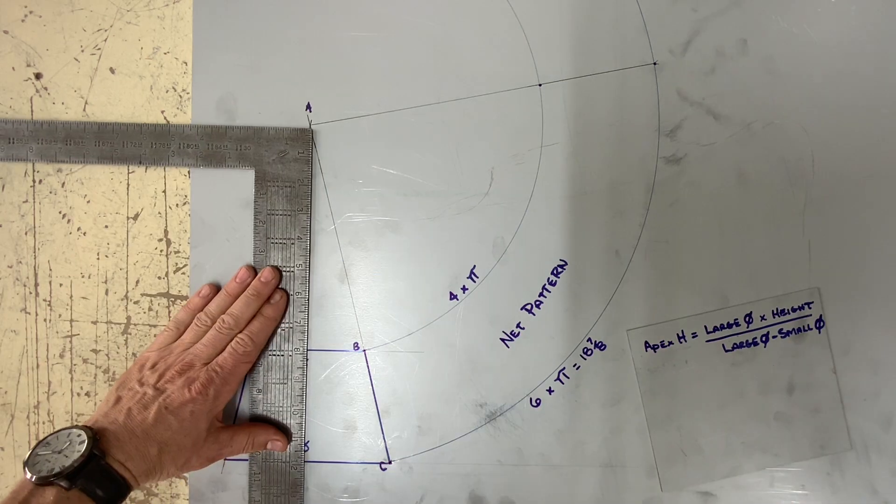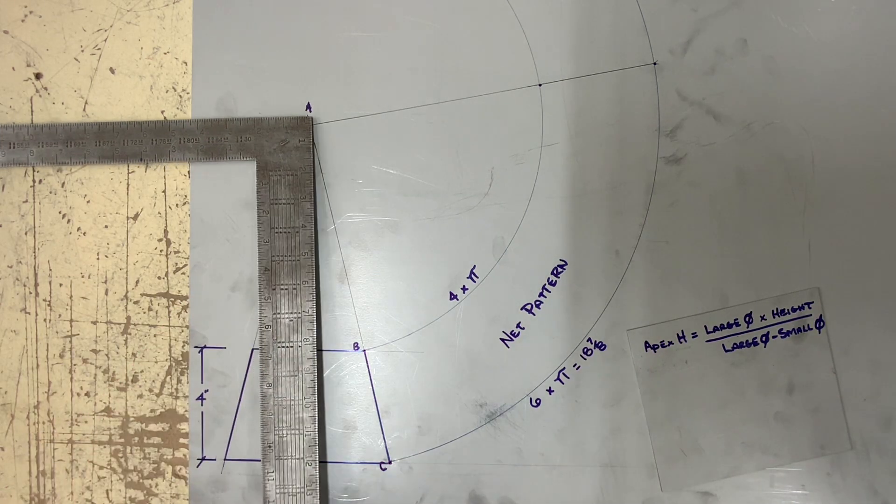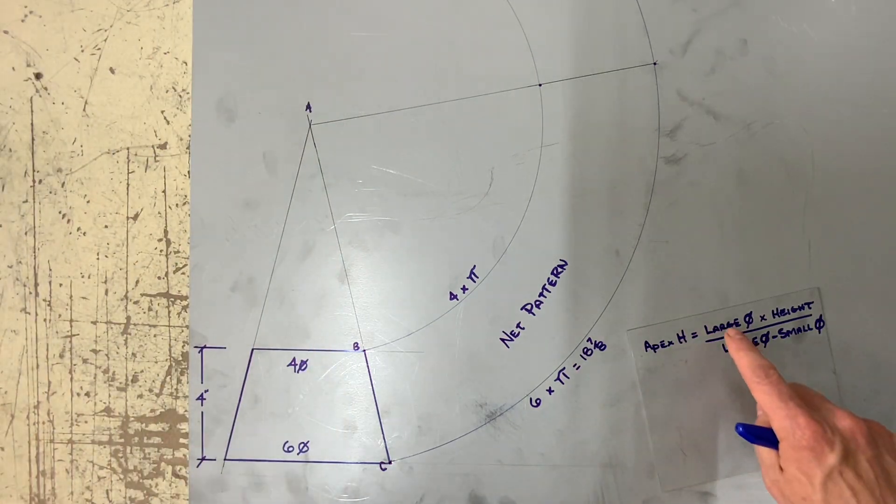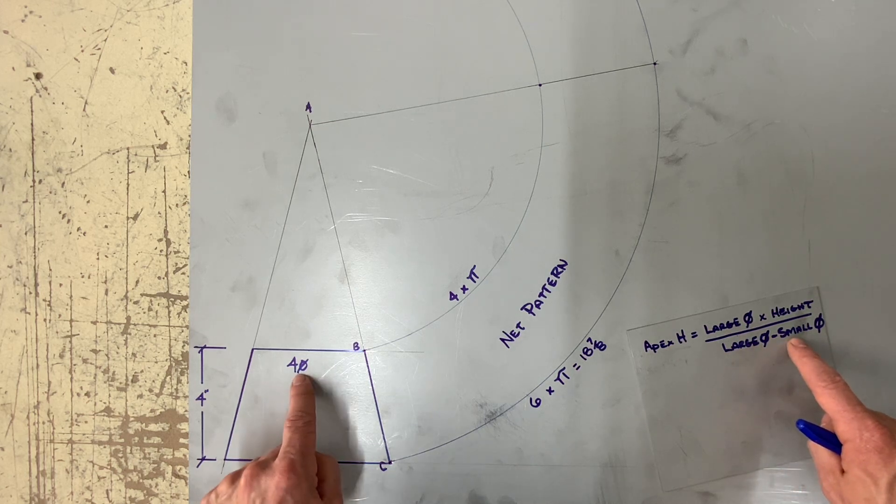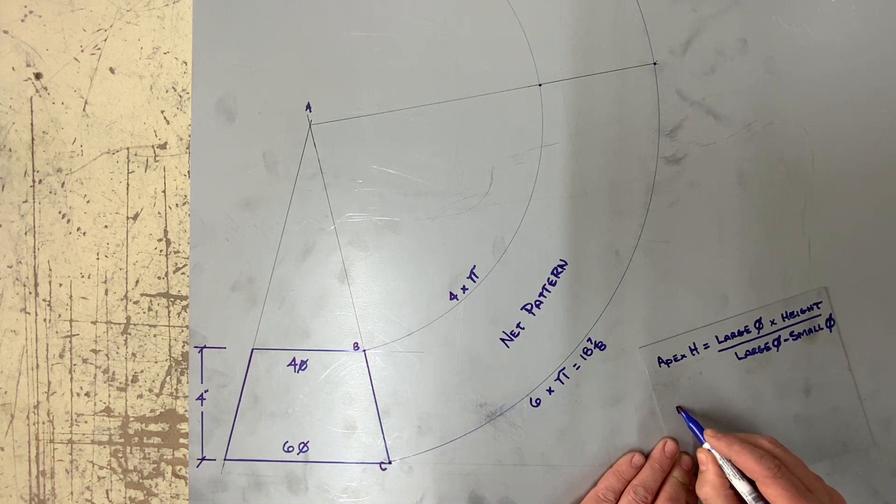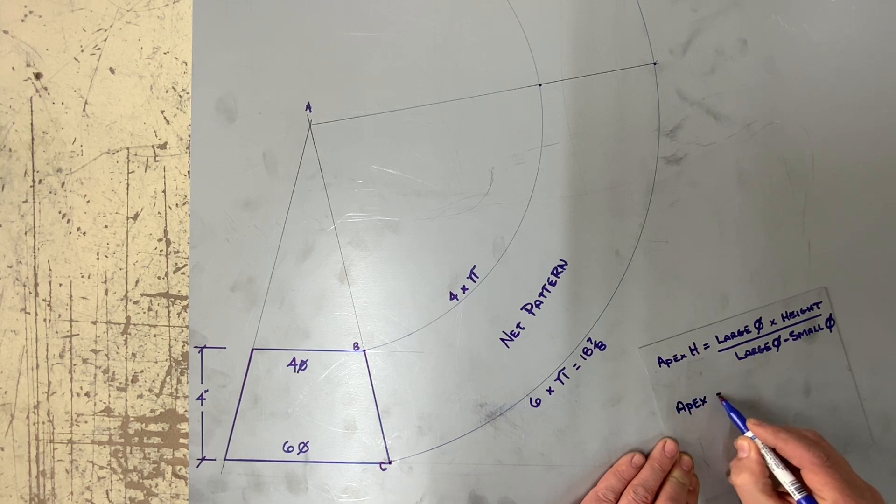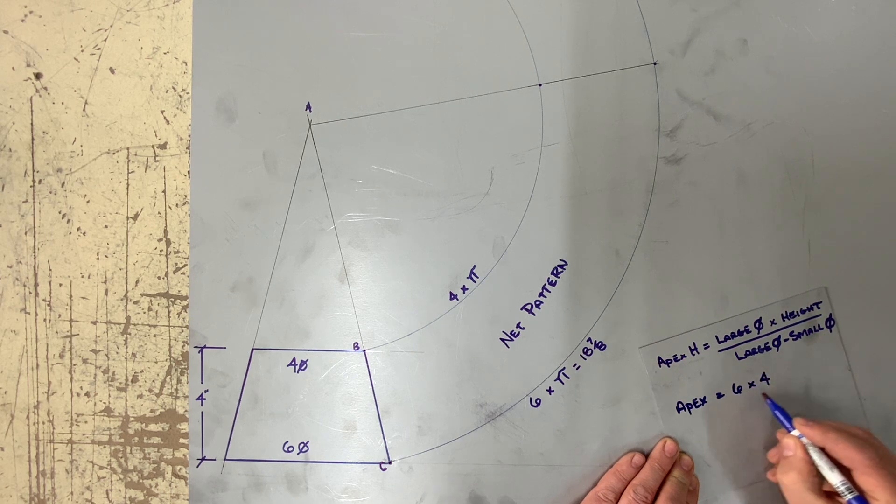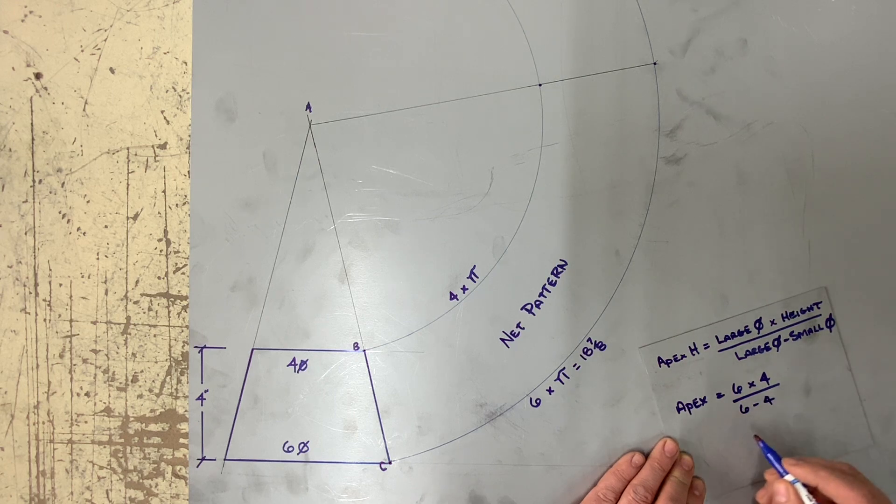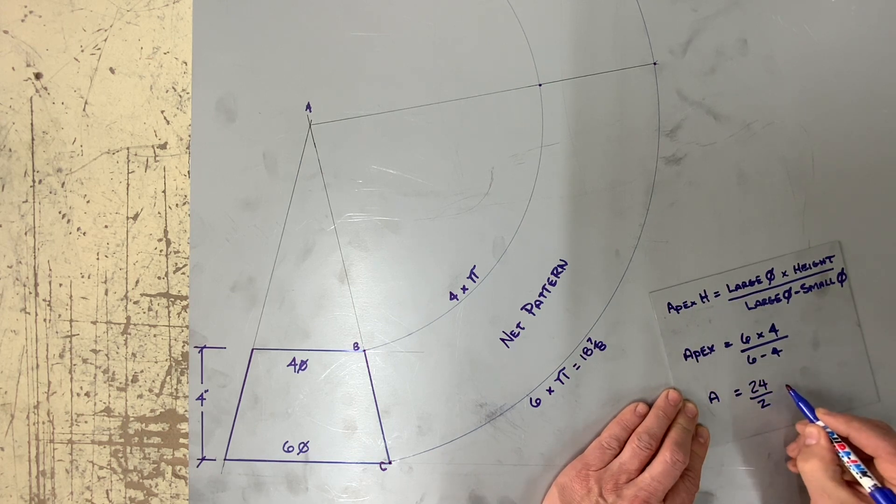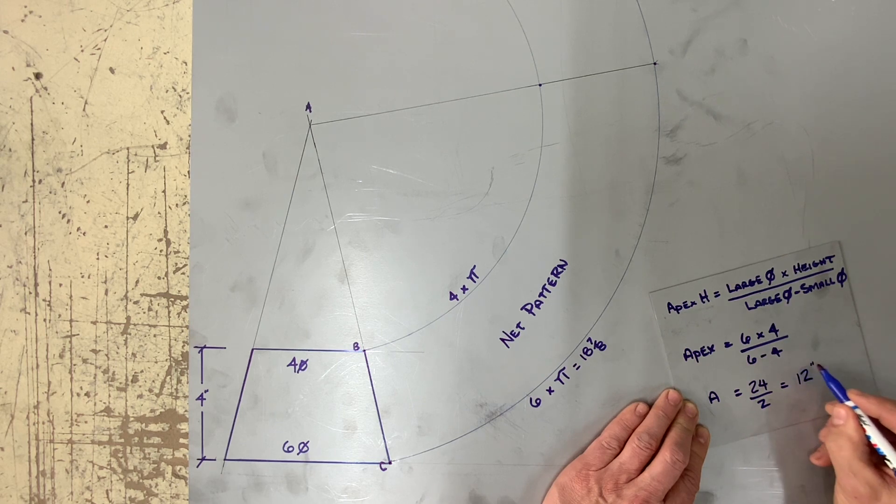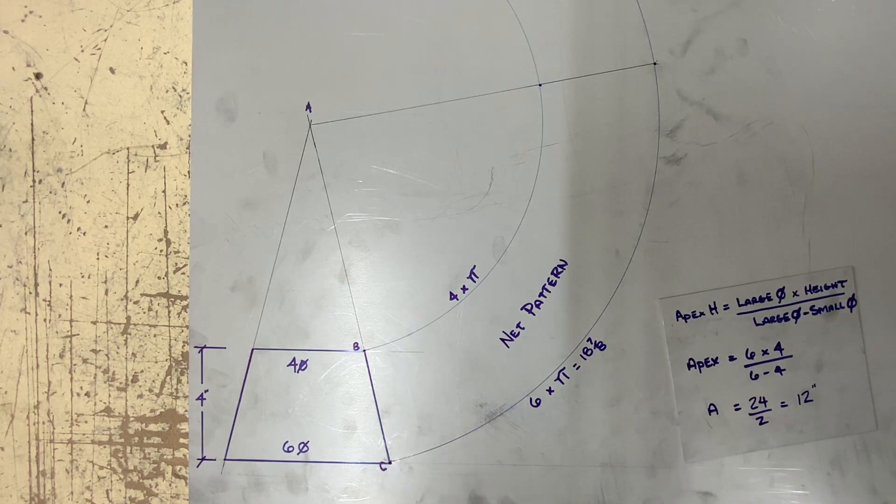Another method of laying out these reducers is by finding mathematically the apex height. Here I wrote a formula down saying apex height equals large diameter times the height divided by the large diameter minus small diameter. Let's work it out. The apex height equals six times four divided by six minus four. Twenty-four divided by two equals twelve. So the formula says my apex is equal to twelve inches.